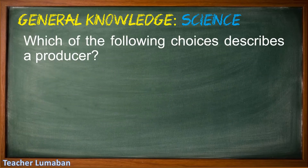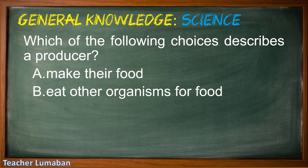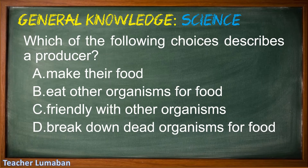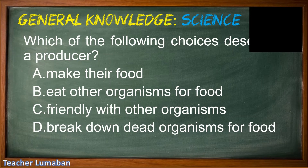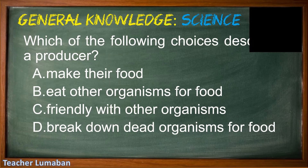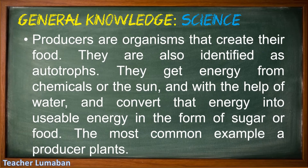Which of the following choices describes a producer? Letter A, make their own food; Letter B, eat other organisms for food; Letter C, friendly with other organisms; Letter D, break down dead organisms for food. Please choose the suitable answer in 5 seconds. 5, 4, 3, 2, 1. The correct answer is Letter A, make their own food. Producers are organisms that create their food, also identified as autotrophs. They get energy from chemicals or the Sun and, with the help of water, convert that energy into usable energy in the form of sugar or food. The most common example of a producer is plants.